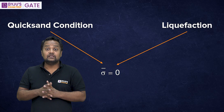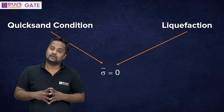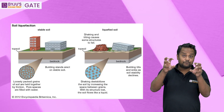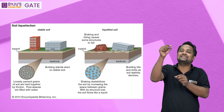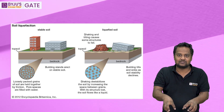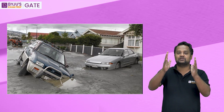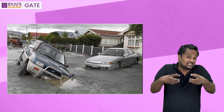In liquefaction, effective stress is also zero, but here it is not due to seepage. In liquefaction, the effective stress becomes zero due to upward dynamic forces, possibly due to an earthquake. From the hypocenter — the place deep inside the earth where the tectonic plates intersect — seismic waves are generated. The epicenter is the nearest point on the ground surface above it. Due to those dynamic shock waves, effective stress becomes zero, and that is liquefaction.